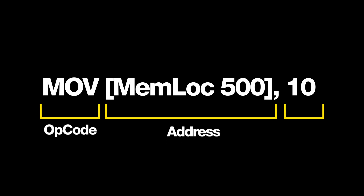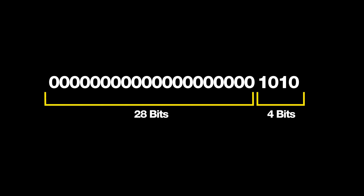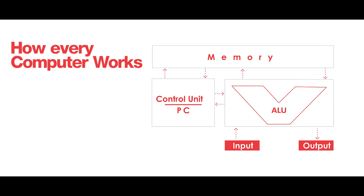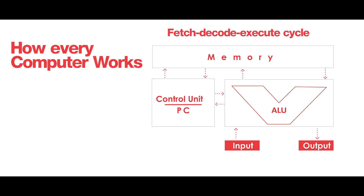500 is the address and 10 is our value that we need to store. Because 10 is only 4 bits, we pad the remaining 28 bits with leading zeros. All that is left is execution. This is the architecture of how every general-purpose computer works — it is called the fetch-decode-execute cycle.